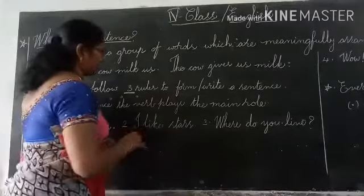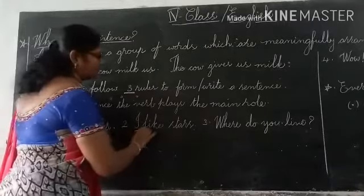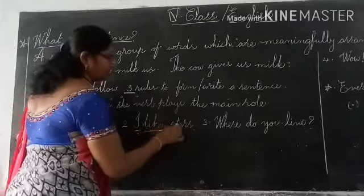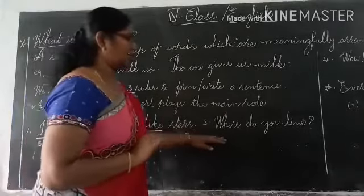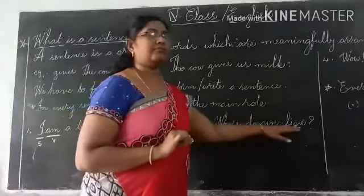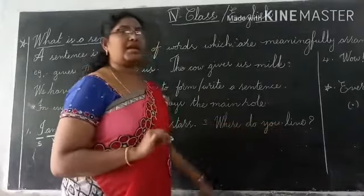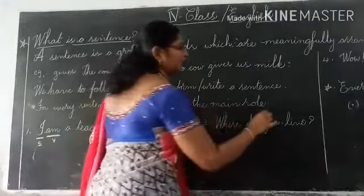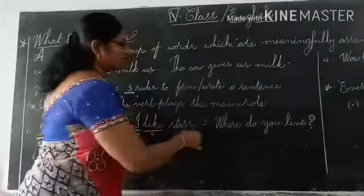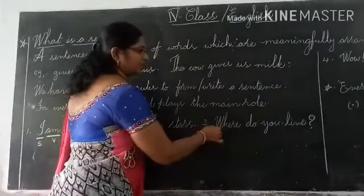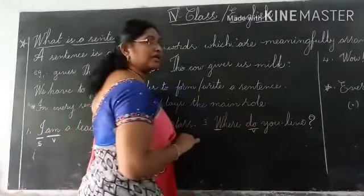'I like stars.' Here, the starting letter is a capital letter. We have subject and also verb. The sentence ends with a full stop. If it is a question — 'Where do you live?' — the question must end with a question mark. The starting letter is a capital letter, and 'do' is a verb.